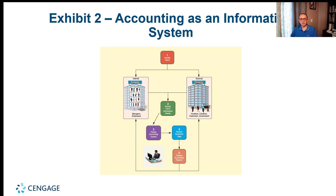How does accounting function as an information system? First, we identify the users and assess their information needs. Then we design the accounting system, record the economic data, and finally prepare the accounting reports — which we call financial statements. That's the final product of accounting. Accountants need to identify who will use the information, whether people inside or outside the business, then record economic data on a regular basis and prepare the financial statements.